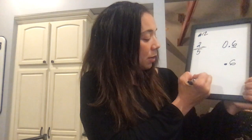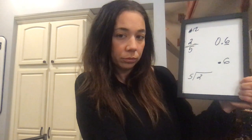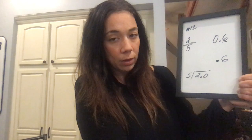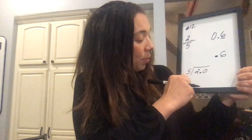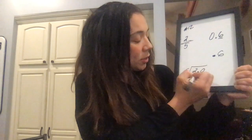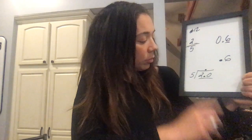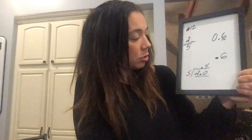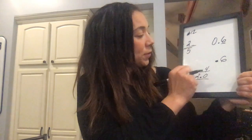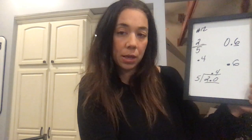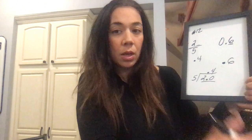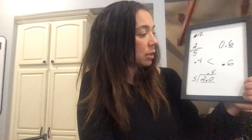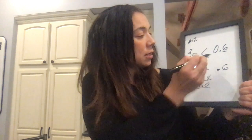The denominator goes outside the house and the numerator goes inside the house. I know I cannot do 5 into 2, so I have to add a decimal and a 0. I can't do 5 into 2, but I can do 5 into 20. The decimal point comes straight up. How many times does 5 go into 20? 4 times. There's no remainder, so 2 fifths is 0.4 as a decimal. Now very easily I can compare 0.4 to 0.6, and I know 4 tenths is less than 6 tenths, so 2 fifths is less than 6 tenths.